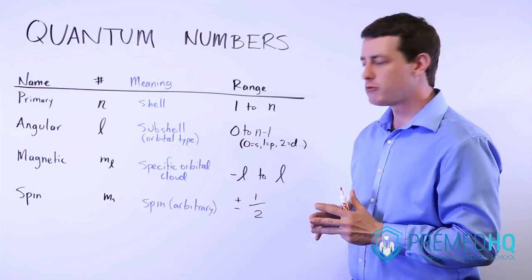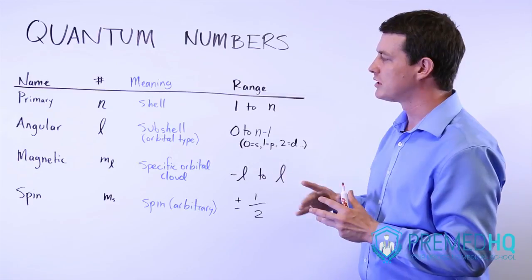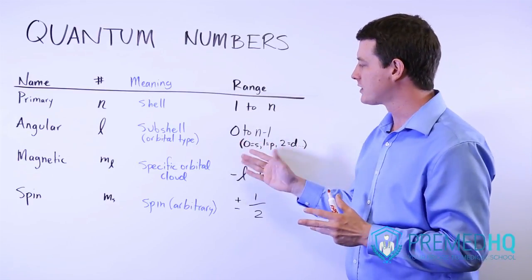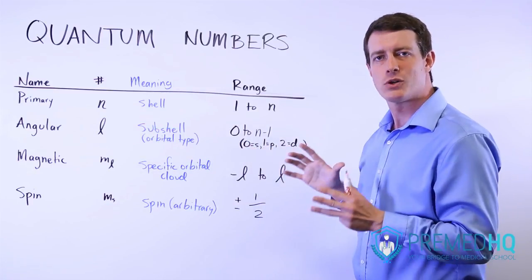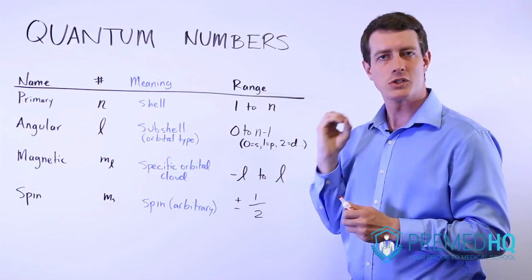And that has a range of anywhere from negative l to l. And so if you're in the s orbital, there's only one of those. And so the only value possible if your l number is 0, meaning an s orbital, the only possible magnetic number is going to be 0 as well.